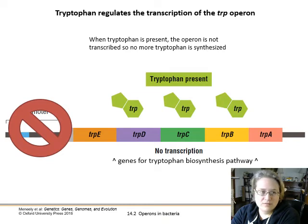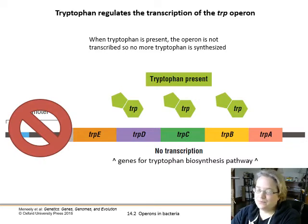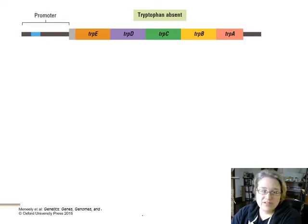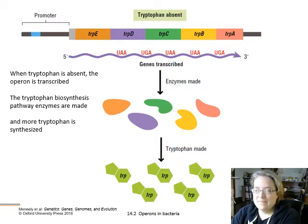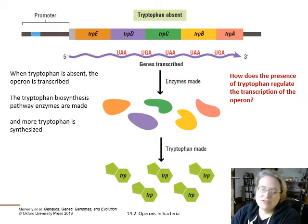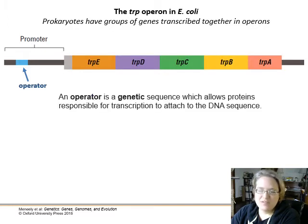When tryptophan is present and builds up enough to find its way back to the DNA, it will prevent transcription of this mRNA. This is like feedback inhibition — the final end product prevents you from starting the whole process again. When tryptophan is absent, the operon is transcribed, the enzymes are made, you make more tryptophan, and then it switches back to repressing production since you have enough tryptophan.